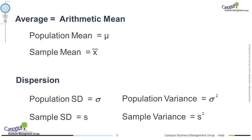Just to get started, averages for the population are represented by mu and for the sample by x-bar. Similarly, standard deviation is represented by sigma for the population, and variance is sigma squared. The sample standard deviation is represented by s and the sample variance by s squared. This is just a refresher.